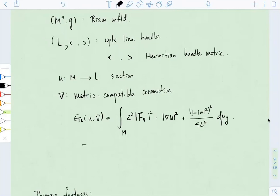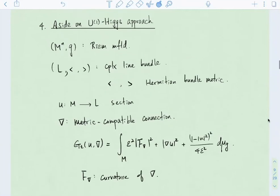Okay, so F-sub-Nabla is the curvature of the connection Nabla. So in this case, it's a purely imaginary value of one form. This is called U1, so the words U1 appeared in the name because when you have a complex line bundle with Hermitian metric, you can locally trivialize it in such a way that the transition function takes values in U1, or also known as the circle.